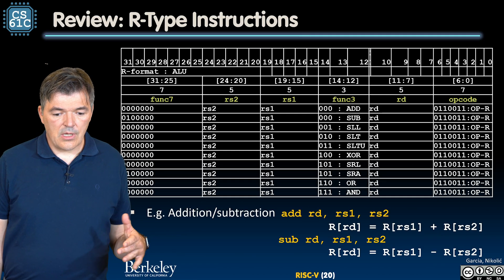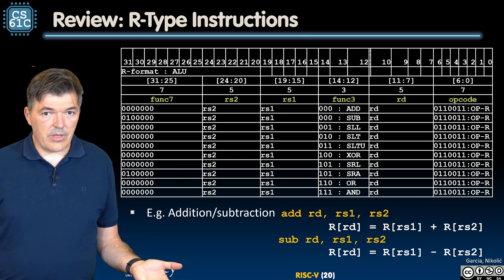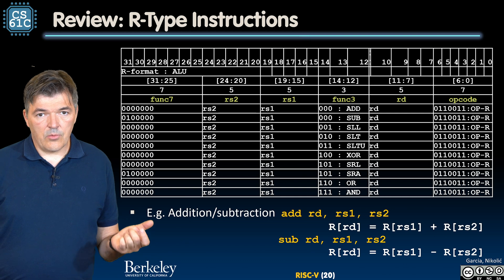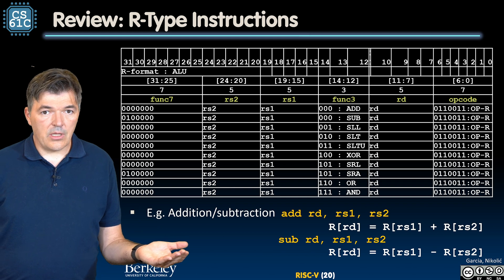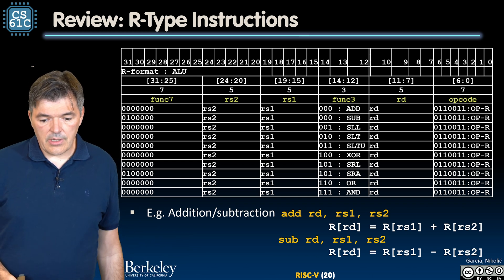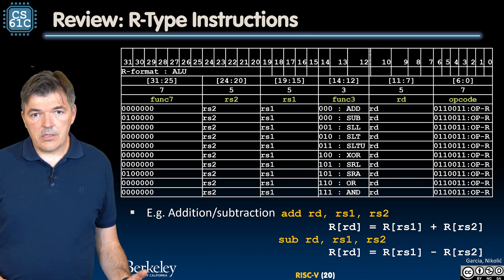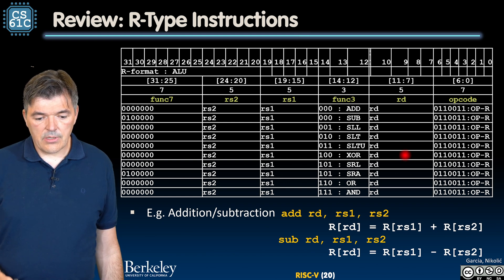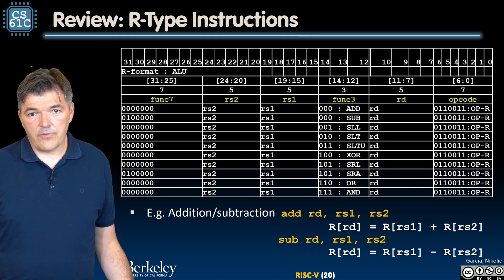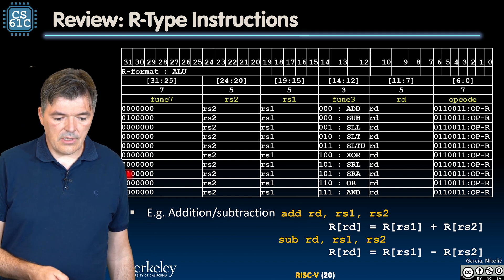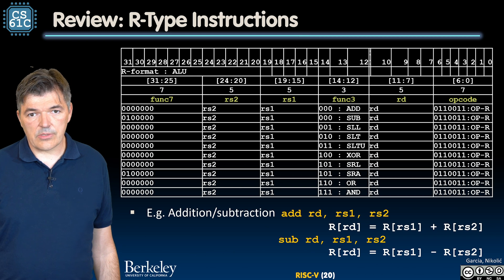Remember our R-type instructions. Those were register to register arithmetic and logic instructions. They all look similar. They had the same opcode 0110011 and same fields for the destination register, first source register and the second source register. And they differed by the encoding of the funct3 field and this slight difference in the 30th bit of instruction.